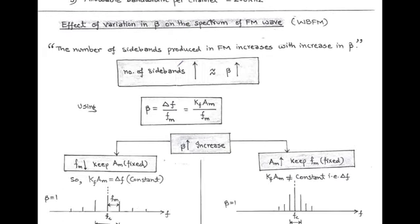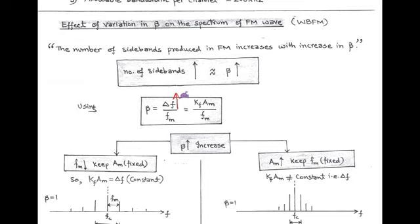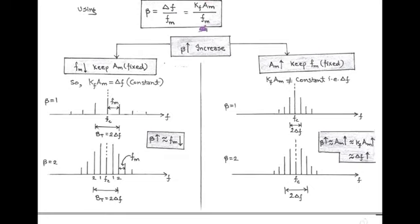Next, we talk about the effect of variation of modulation index β on the spectrum of FM, especially wide band FM. We know that the transmission bandwidth of wide band FM is 2·ΔF. Also, modulation index β equals ΔF/FM. When β increases, ΔF also increases and accordingly the number of sidebands increases. So we can say that the number of sidebands in FM increases with increase in modulation index β. We use modulation factor β = ΔF/FM, and ΔF = KF·AM. For increasing β, we have two cases.